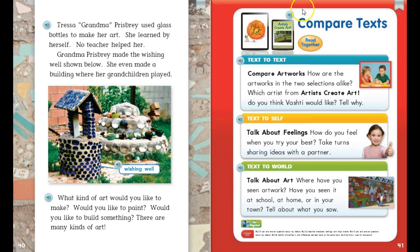Now it's your turn. You're going to complete three connections: text-to-text, text-to-self, and text-to-world. For text-to-text, talk about how the artwork in the two selections are alike — from "The Dot" and "Artists Create Art" — and which artist from "Artists Create Art" do you think Vashti would like, and why? For text-to-self, how do you feel when you try your best? Talk that question over and have a short discussion with your learning adult.